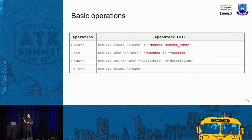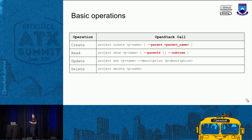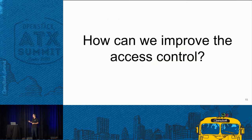To do this, you just need to add a parent option on the OpenStack call to create a project. You can say you will create a sub-project for a given parent using the parent name. Or you can retrieve the list of parents using the parent option. You can use project show to retrieve the sub-tree and see the sub-projects using the sub-tree option. These are the basic operations related to Hierarchical Multi-Tenancy.